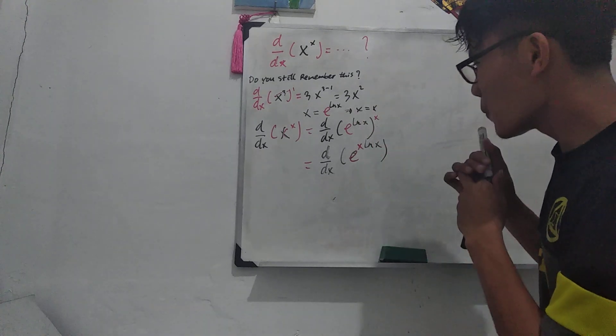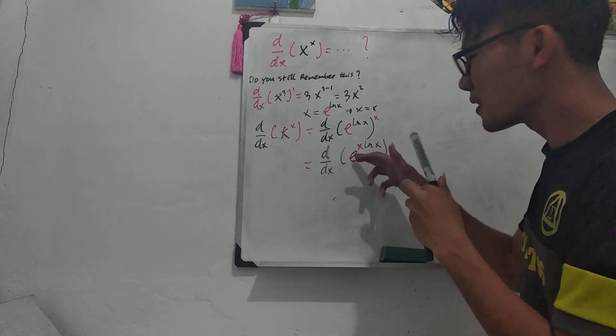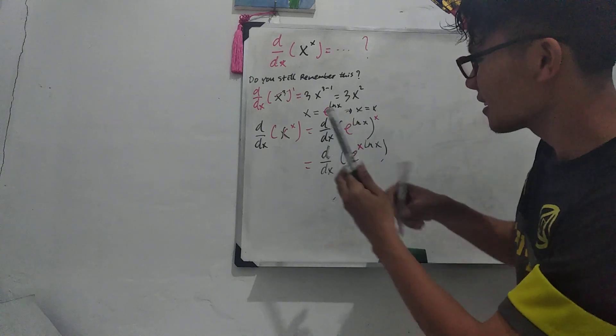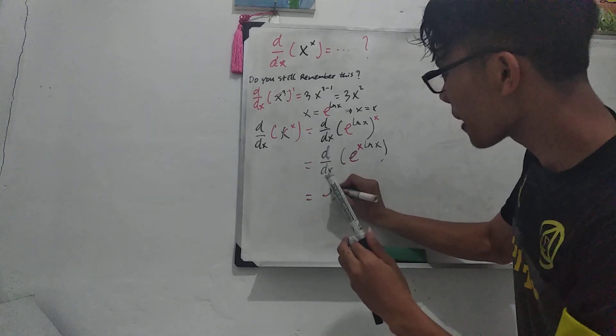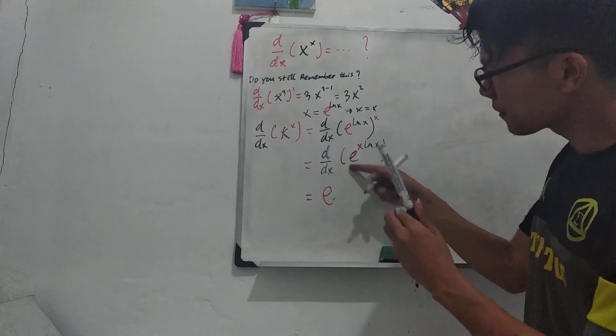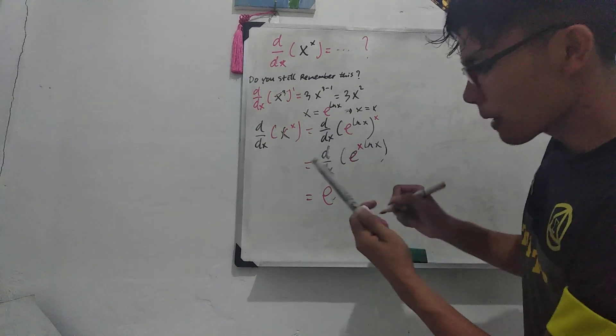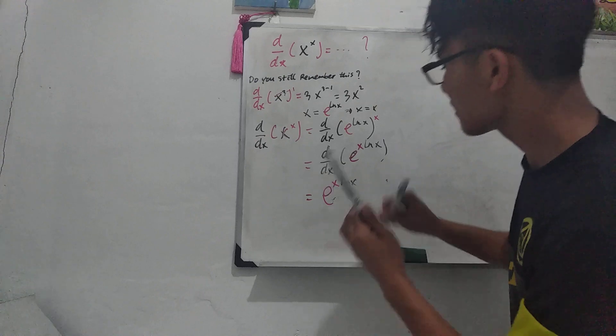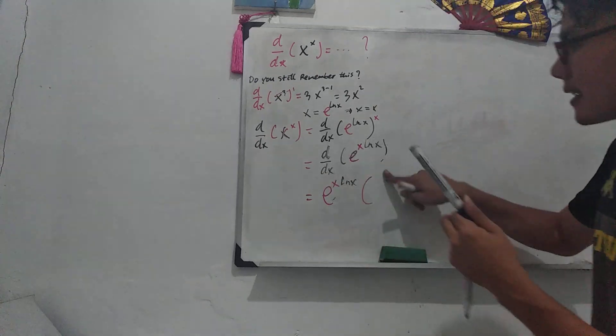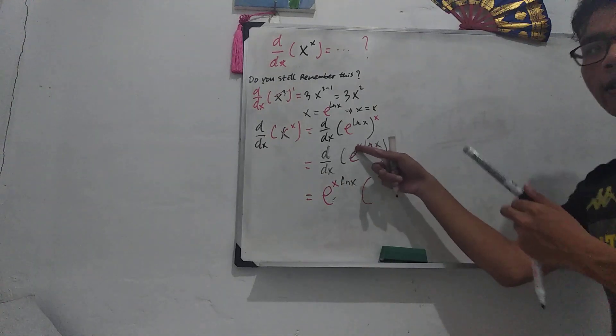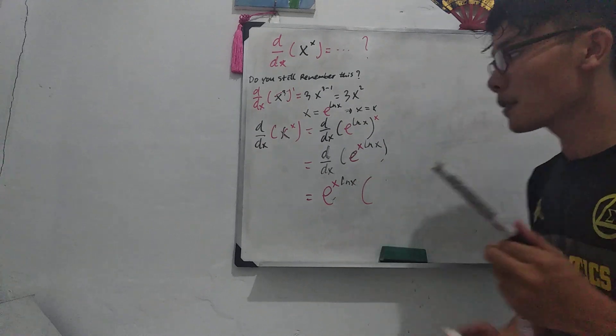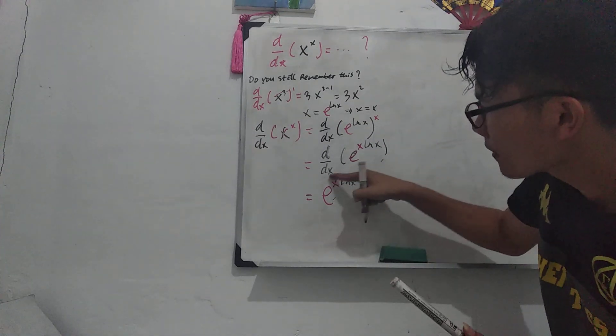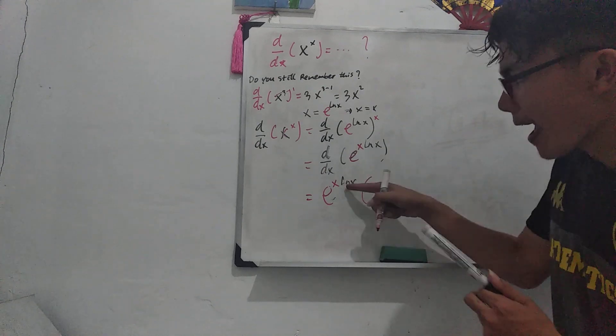And then we know, to find the derivative of this, well we can do this, right? So now I will write the derivative of this one. It's gonna be e to the power of x ln x, and I will multiply it with the derivative of the power, of its power. So now we'll describe here the derivative of this power. So x ln x.